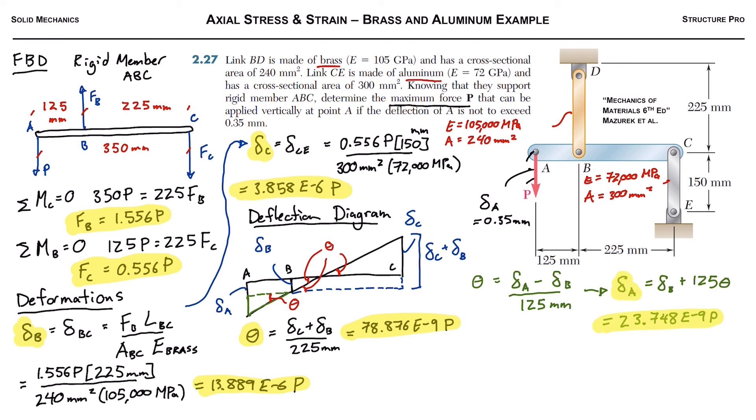So at this point, we have delta A in terms of P, but we have the last step here, which is to compare this with the maximum value that we're given of 0.35 millimeters. We're told point A can't move down more than that. So if delta A equals 0.35 millimeters, setting that equal to what we solved for, we can isolate P and we get P equal to 14.74 kilonewtons. And there's our final answer.